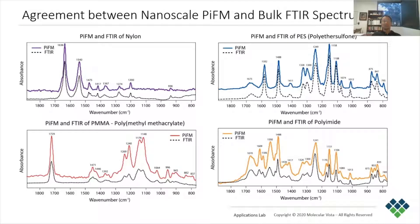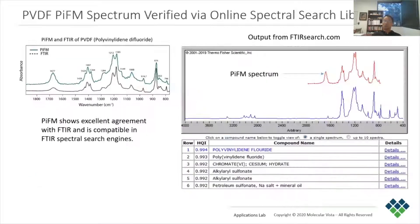The nanoscale PIFM spectra are compared to the bulk FTIR spectra for several homogeneous materials: nylon, polyethylsulfone (PES), polymethyl methacrylate (PMMA), and polyimide. We can see that the agreement between the PIFM and FTIR spectra is excellent on these homogeneous materials.